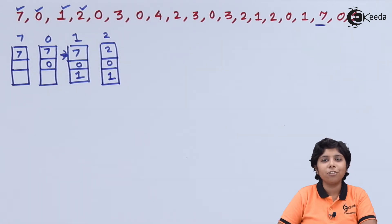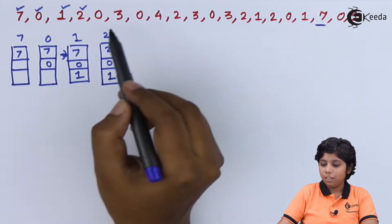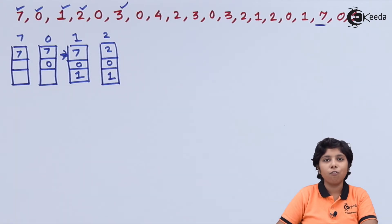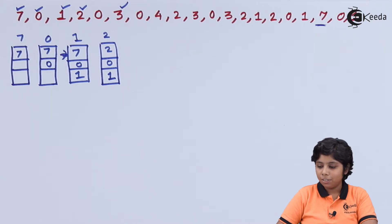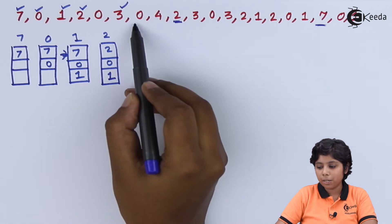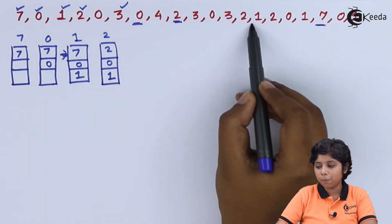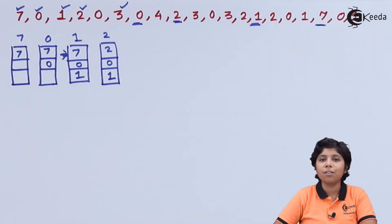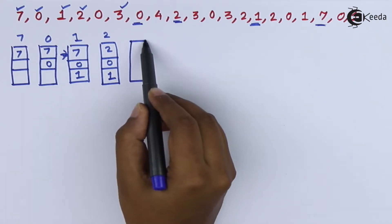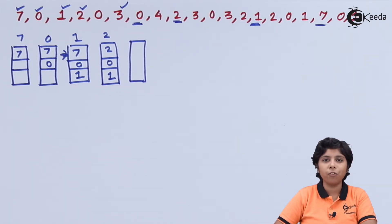Now 0 will not cause a page fault as 0 is already in the frames. For page 3, it will definitely cause a page fault. So we calculate again among 2, 0, and 1, which will appear furthest in the future. As we can see, 2 is appearing here, 0 is appearing here, and 1 is appearing latest. So 1 is the one that will appear at the most distant point, and we will replace 1 with 3.